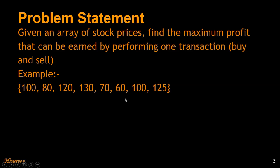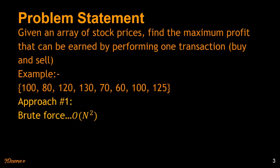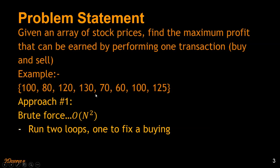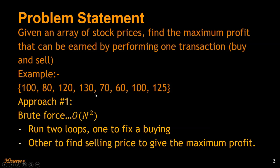The first approach would be to run two loops: fix a buying price, and then scan each selling price after that day to figure out the maximum profit. You will need two loops for that, and it ends up being O(n²). It's a very naive approach.